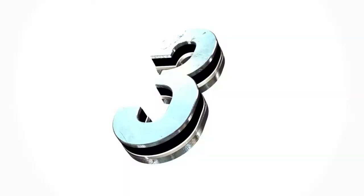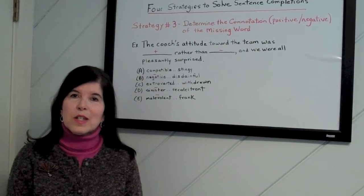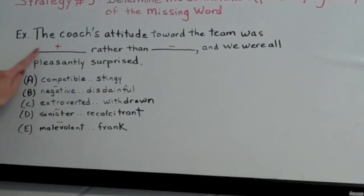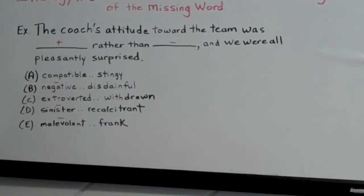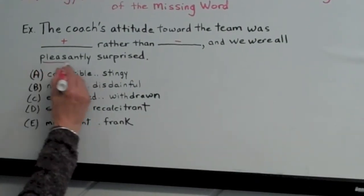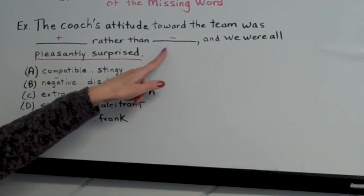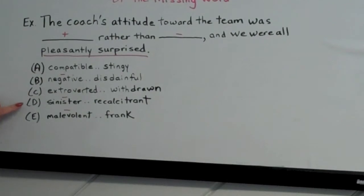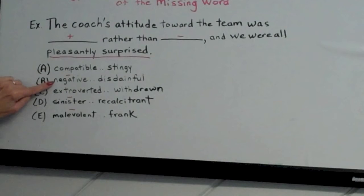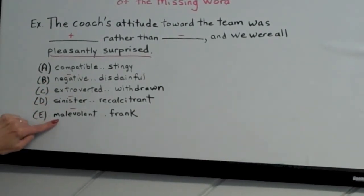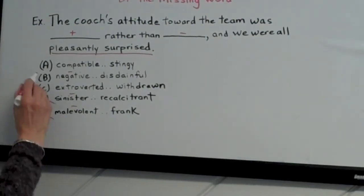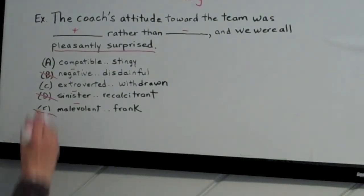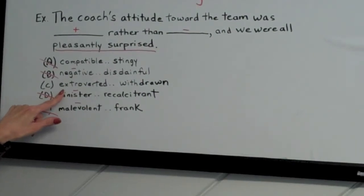Strategy number three: determine the connotation of the missing word — is it positive or negative? This is especially helpful on difficult long sentences. For example: 'The coach's attitude toward the team was blank rather than blank, and we were all pleasantly surprised.' If we were pleasantly surprised, his attitude was positive rather than negative. Looking at the choices — compatible/stingy, negative/disdainful, extroverted/withdrawn, sinister/recalcitrant, malevolent/frank — negative, sinister, and malevolent are all negative, so we eliminate those. Compatible/stingy doesn't make sense together. He was extroverted rather than withdrawn, and we were all pleasantly surprised. Perfect.